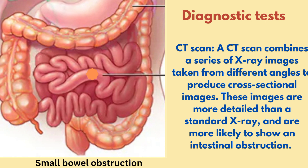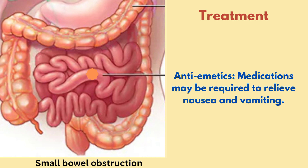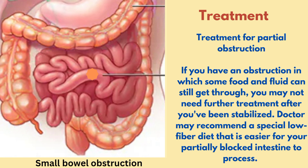Now let us see the treatment options. Your doctor will give you medicine and fluids through an intravenous line. They may also run a thin tube through your nose and into your stomach — this is called an NG tube — which lets out fluids and gas to ease your symptoms. You may also be given antiemetics, medications to relieve nausea and vomiting. For partial obstruction, if some food or fluid can still get through, you may not need further treatment after stabilization. The doctor may recommend a special low-fiber diet that is easier for your partially blocked intestine to process.